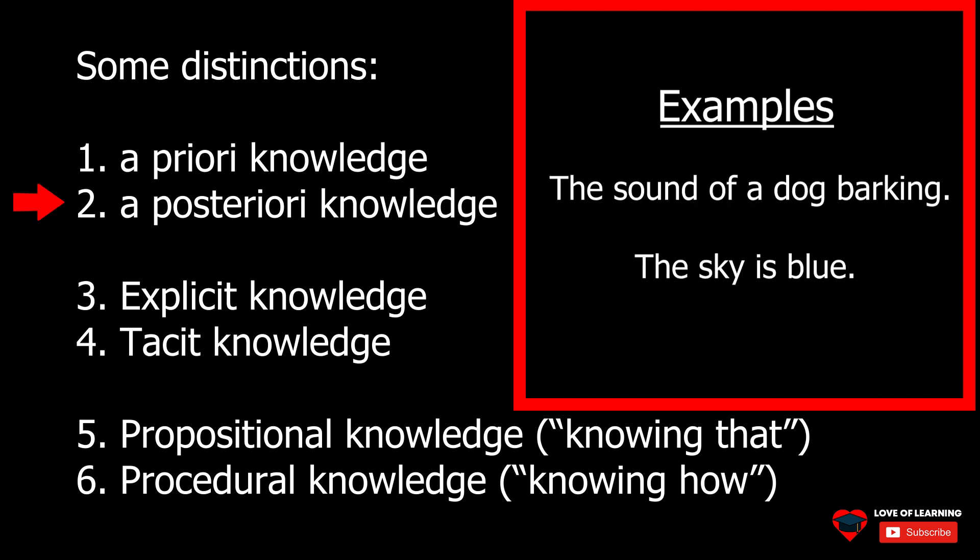A posteriori knowledge is knowledge that is known by experience, that is, it is empirical, or arrived at through experience. Knowledge can be reasoned and logically explained only after an individual has observed a certain event with their senses. A classic example of a posteriori knowledge is the observation that the sky is blue. We know that the sky is blue because we have observed it with our eyes.